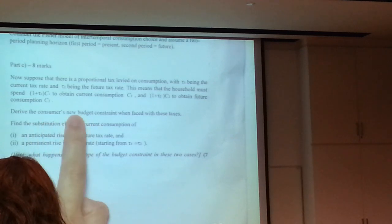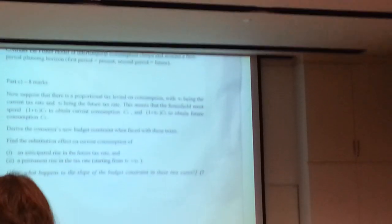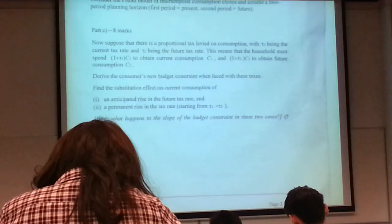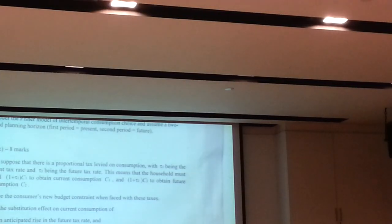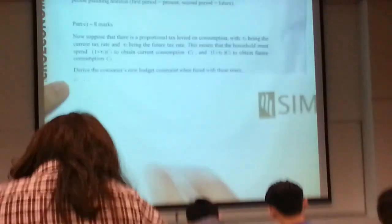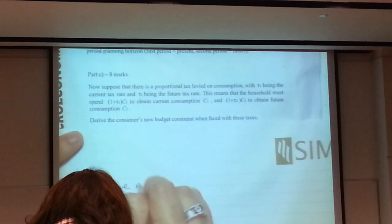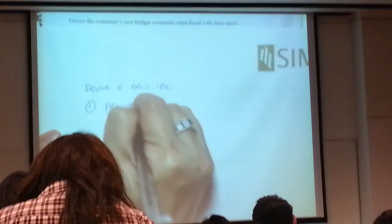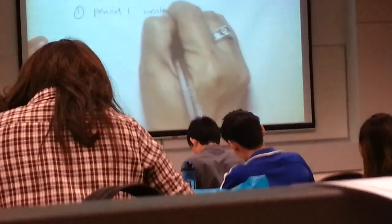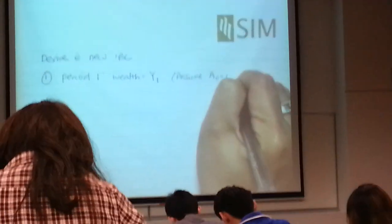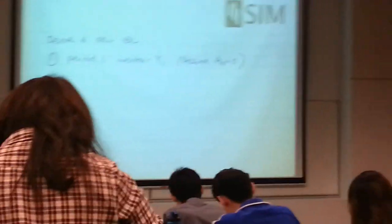So the question being as given says, derive the consumer's new budget constraints when faced with these taxes. So I'm going to demonstrate to show you. So let's look at the steps. So we want to derive the new IBC. Remember, if we derive IBC, step 1, we start with period 1. We look at our wealth, and it's only Y1. So we assume A0 is zero. We assume there is no non-human wealth.